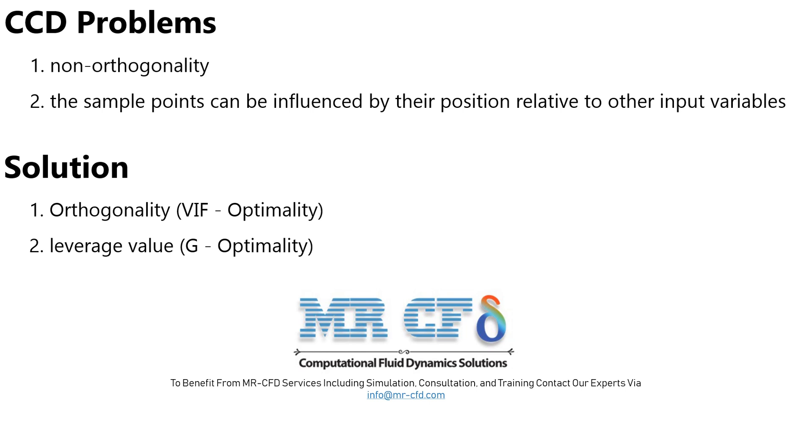And then for the second problem, to minimize the opportunity for effective sample points, a leverage value for each of the sample points is considered, which is the diameter of a matrix. In the G-optimality method, the maximum level value of the sample points reaches its minimum value.